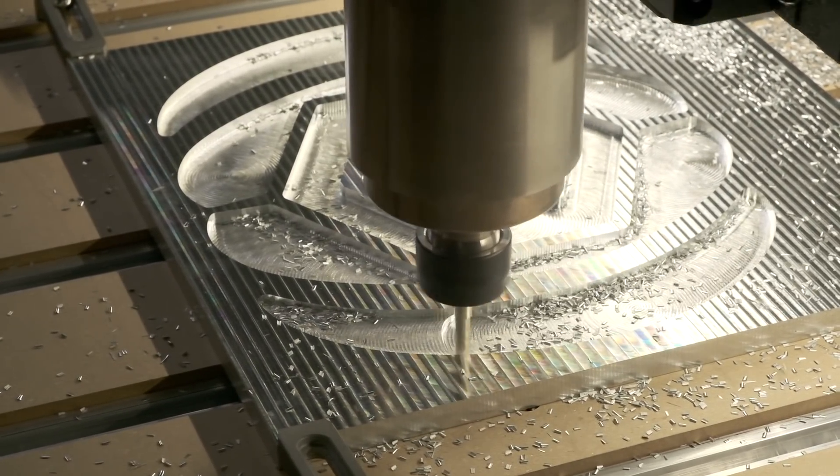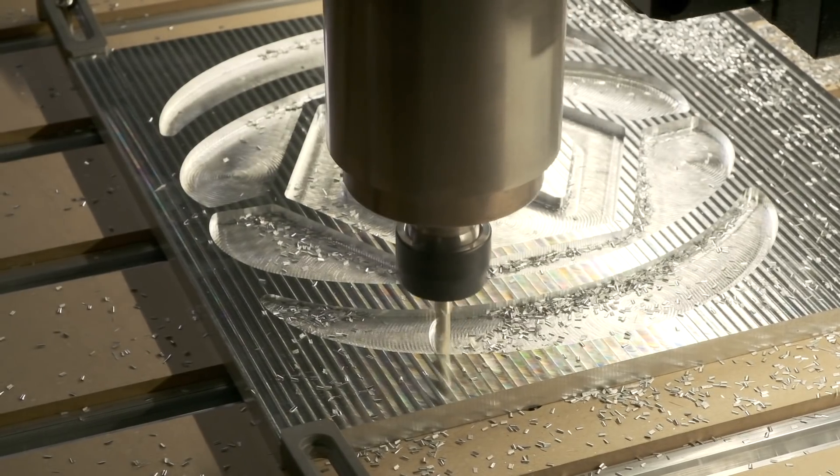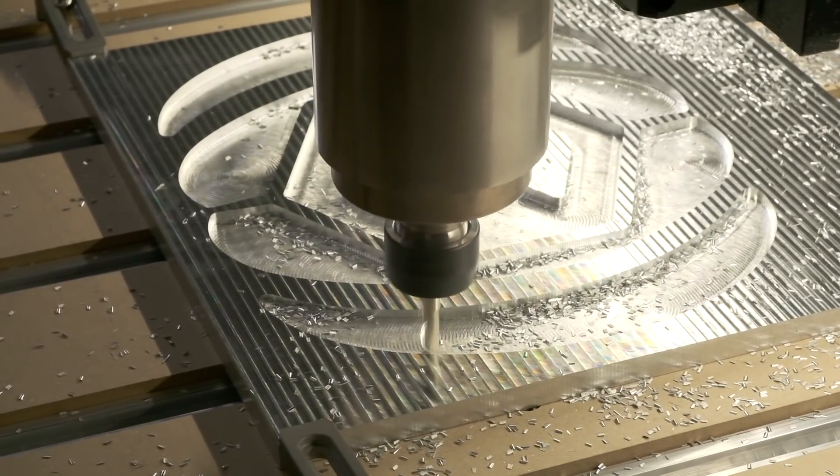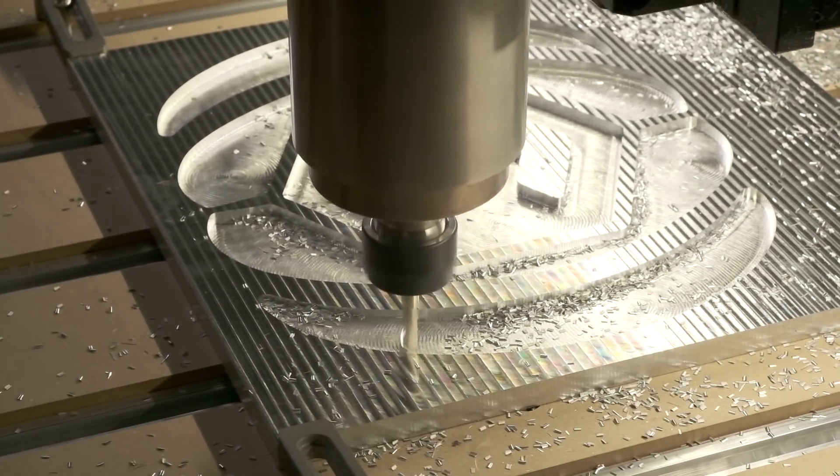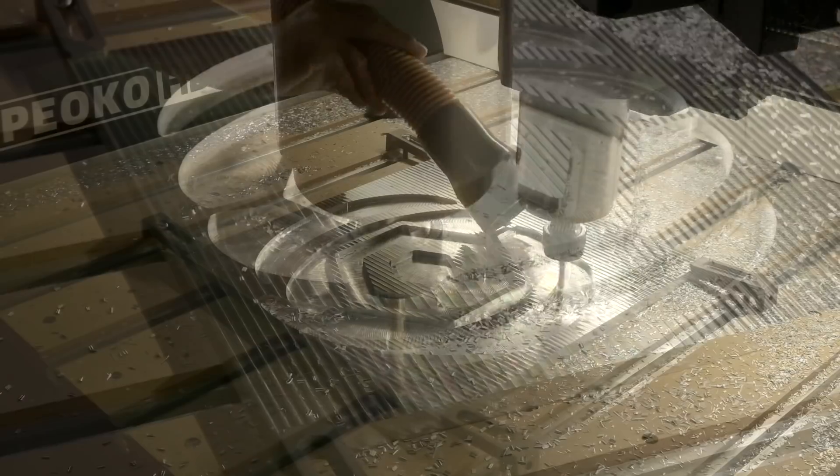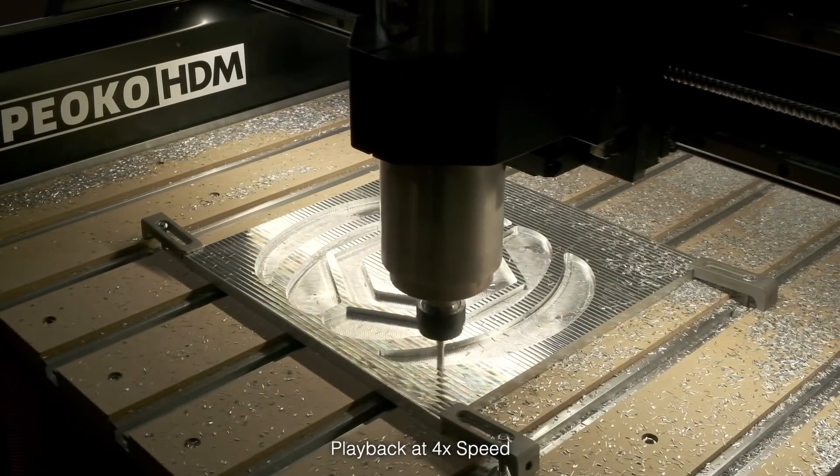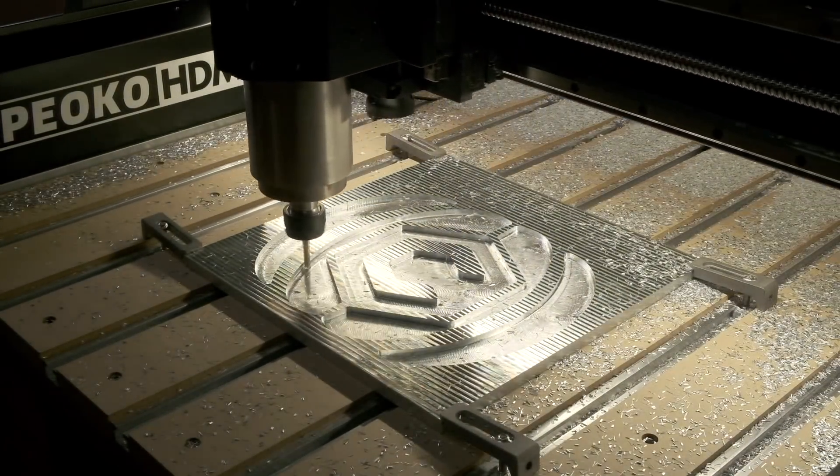These parameters really aren't all that crazy as I'm still learning the capabilities of the HDM, but they're still much more aggressive than anything I would run on the Shapeoko 3 or 4, and these cuts sound really solid. There are none of the hints of chatter that you might hear on a lighter weight Shapeoko. By the end of the first roughing operation, I was running at about 150% feed rate override as I gained confidence in the machine.